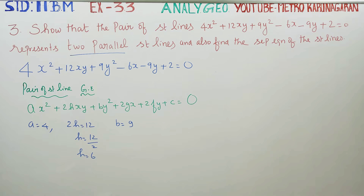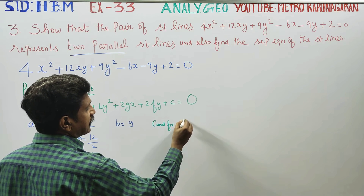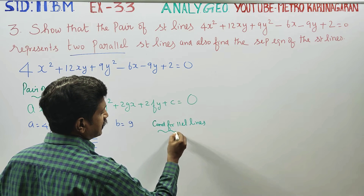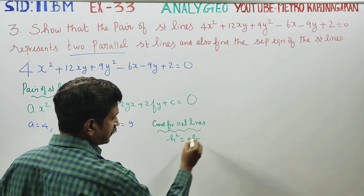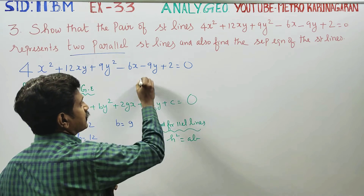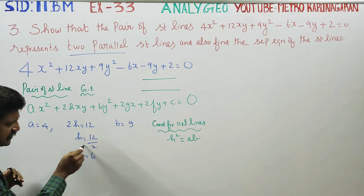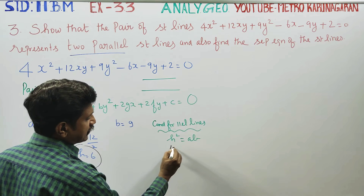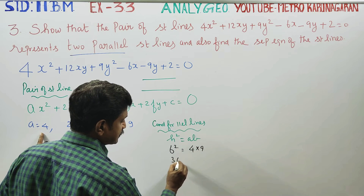For parallel lines, we need to check the condition for parallel lines. The condition for parallel lines is h² = ab. What is h²? h = 6, so h² = 36. And a × b = 4 × 9 = 36.